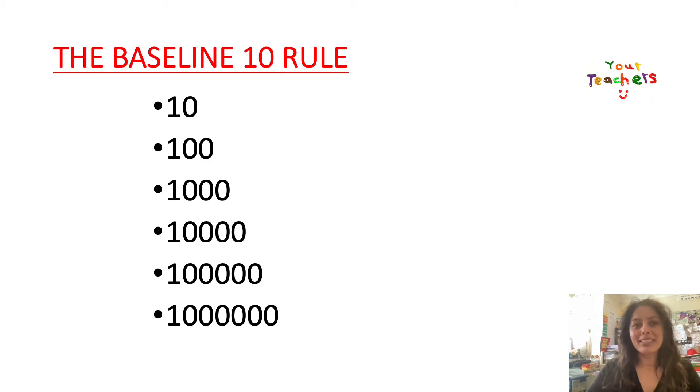Well, it always starts off with a 10. So if you look at the numbers going down, 10, 100, 1,000, 10,000, etc., it always starts with a 10. So when you're converting fractions to decimals, it's always easier if you have a denominator that has a baseline of 10.